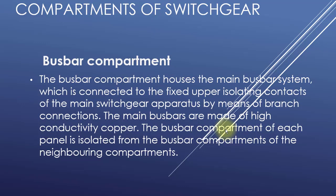Hey guys, now we will start our new topic. In the previous slide we have seen different compartments of the switchgear. Now we will discuss in detail about the bus bar compartment. The bus bar compartment houses the main bus bar system, which is connected to fixed upper isolating contacts of the main switchgear apparatus by means of branch connections.